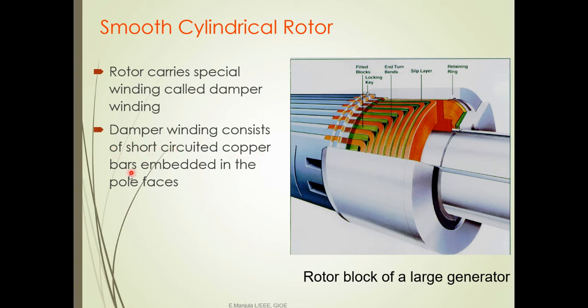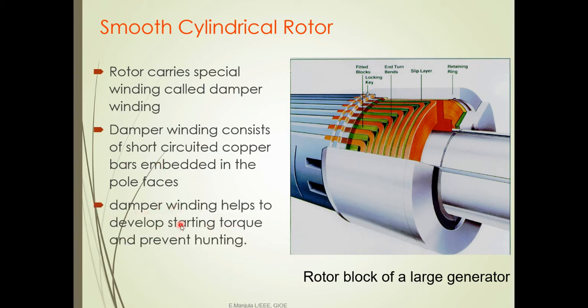The damper winding consists of short-circuited copper bars embedded in the pole face. Damper winding helps to develop a starting torque and prevent hunting. It is an extra winding included in the rotor for two purposes: to develop torque at the time of starting and to prevent hunting. Hunting is the oscillation of the rotor. In order to prevent the rotor from oscillating, we use a damper winding, and also to get a starting torque — very important, since a synchronous motor is not a self-starting motor. For starting, we use the damper winding.